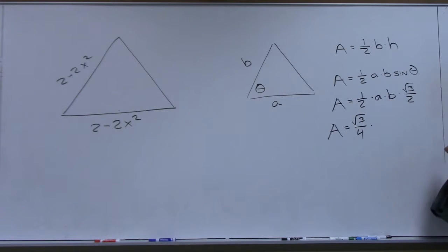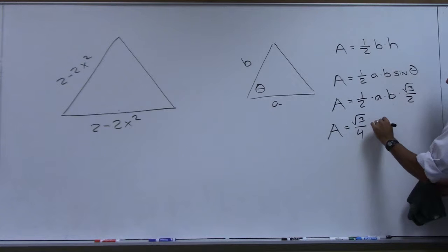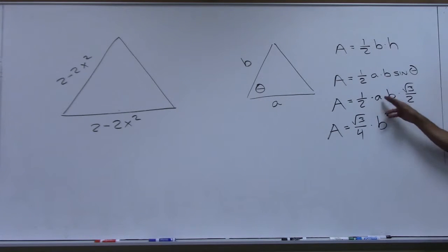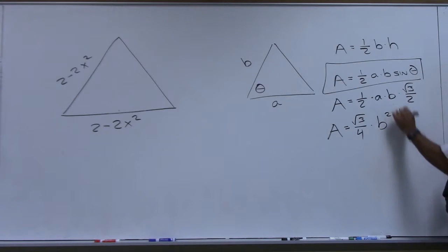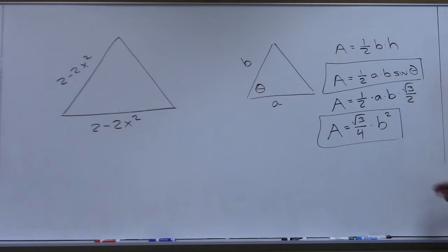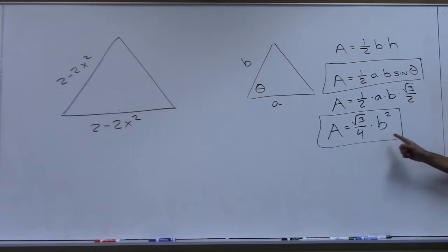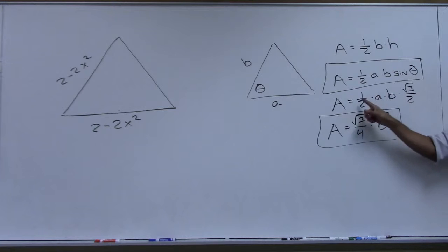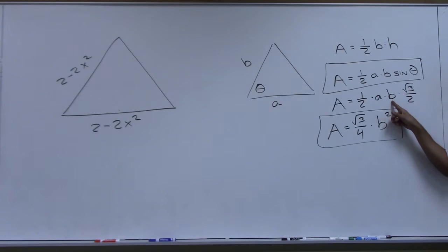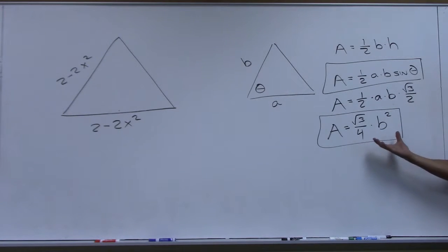Because it's equilateral, theta has to be 60 degrees. And sine of 60 degrees is root three over two. So this formula becomes one-half A times B times root three over two, which is root three over four. If A and B are the same on an equilateral triangle, this becomes B squared. This is actually the formula for the area of an equilateral triangle, because equilateral will always have 60 degrees and A will always equal B.